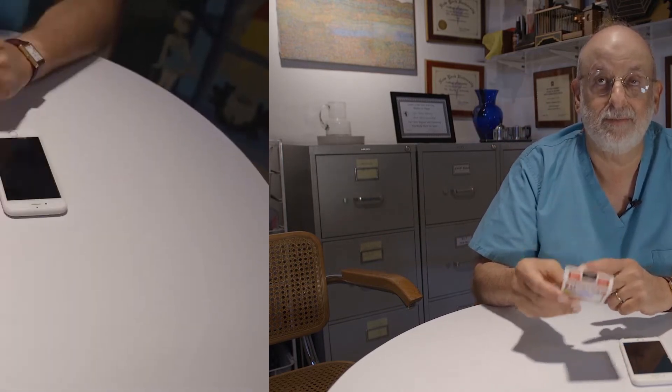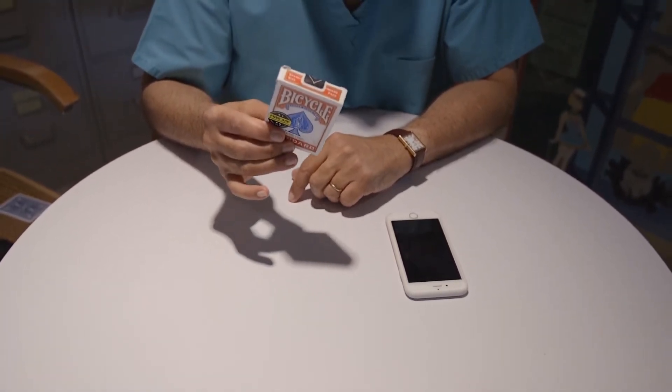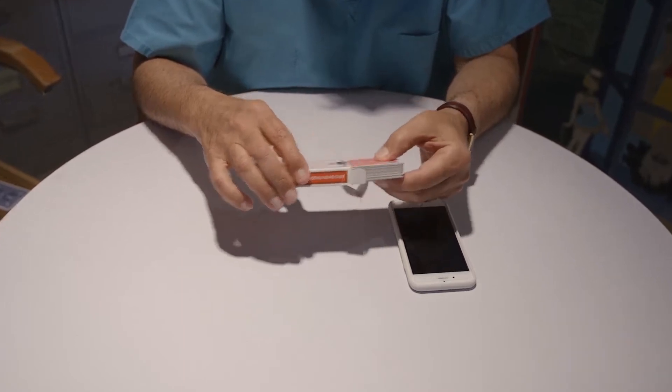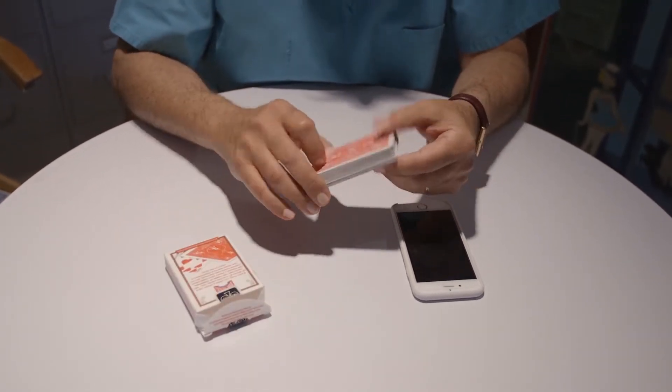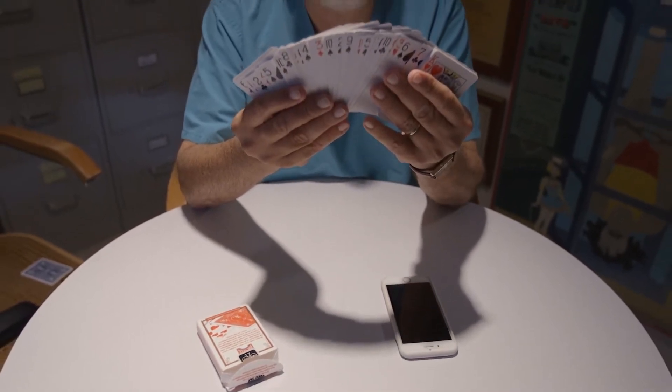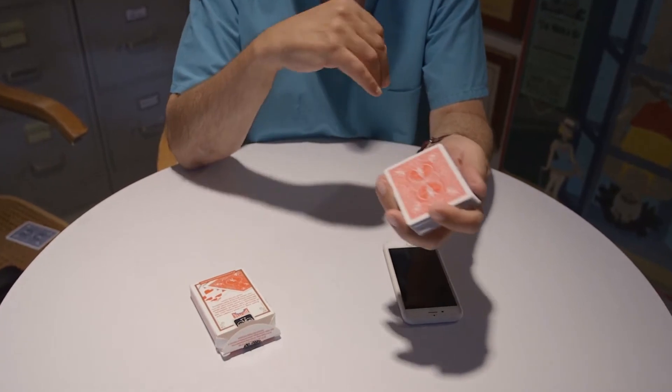This could be any deck of cards or cards you've been using for all your other effects, or you could start with the deck of cards in the box. So the first thing you will do to perform Flash Beam is remove the cards from the pack. You can now show all the cards to be different, and if you wish you could cut the cards and shuffle the cards.